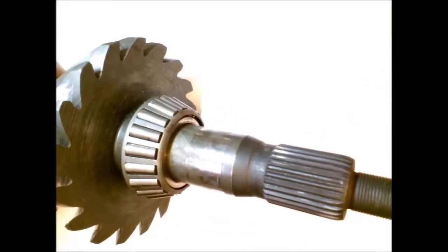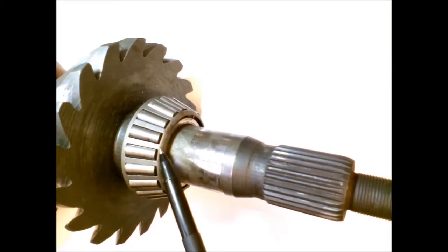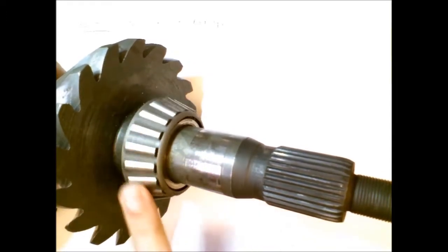We only have the inner race right there, the separator, and the rollers. And you can see how this rolls very smoothly along the race.